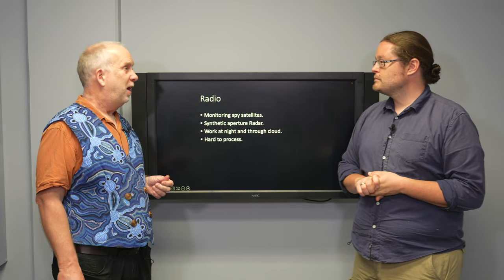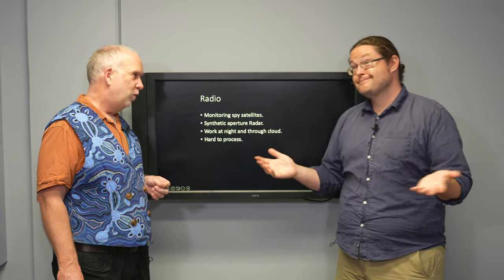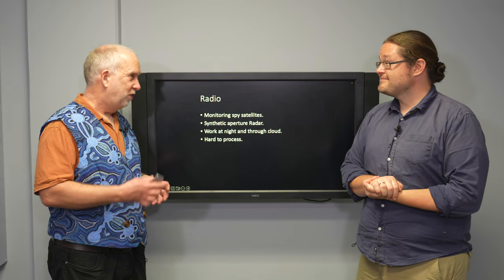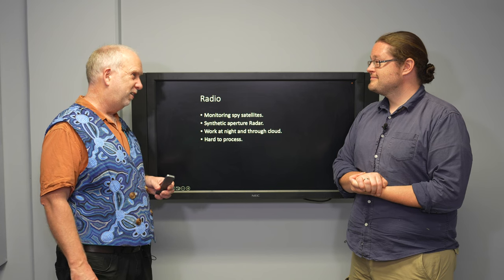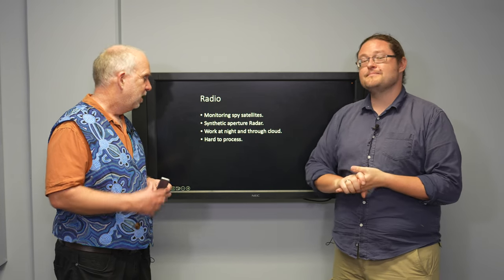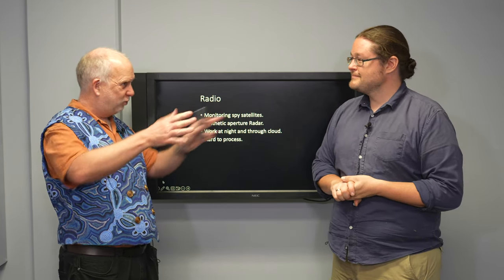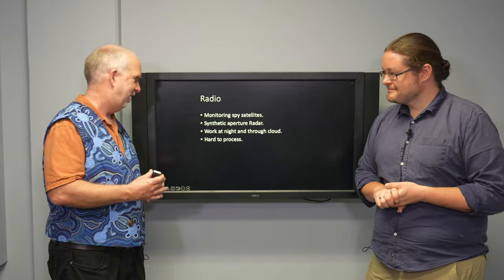To begin with, there were a lot of spy satellites that would listen into radio communications. So for a long time, for example, the microwave link that was used by the Soviet leadership to talk to each other, the American spy satellites would listen into that. They'd use diffraction because not all the beam would go the right direction. Some would go out sideways, and a well-positioned satellite could listen into that.